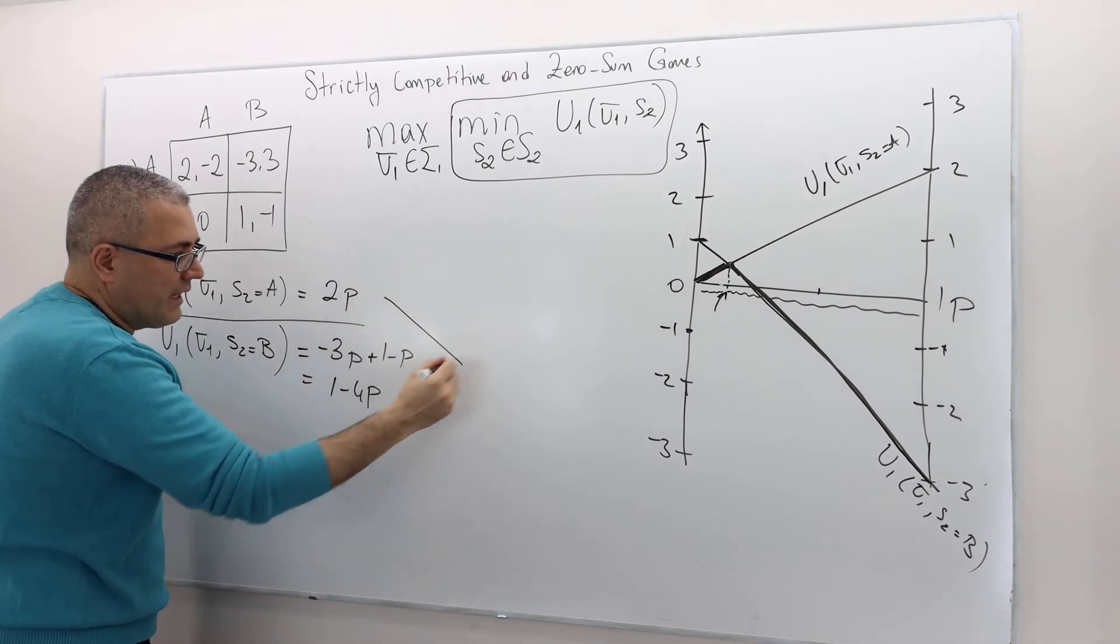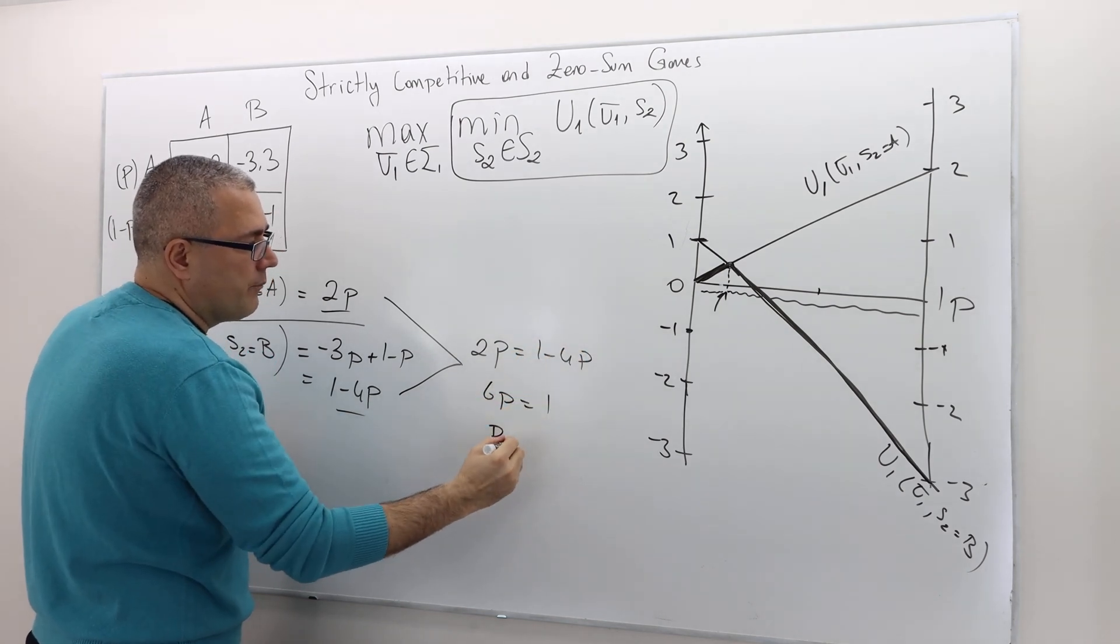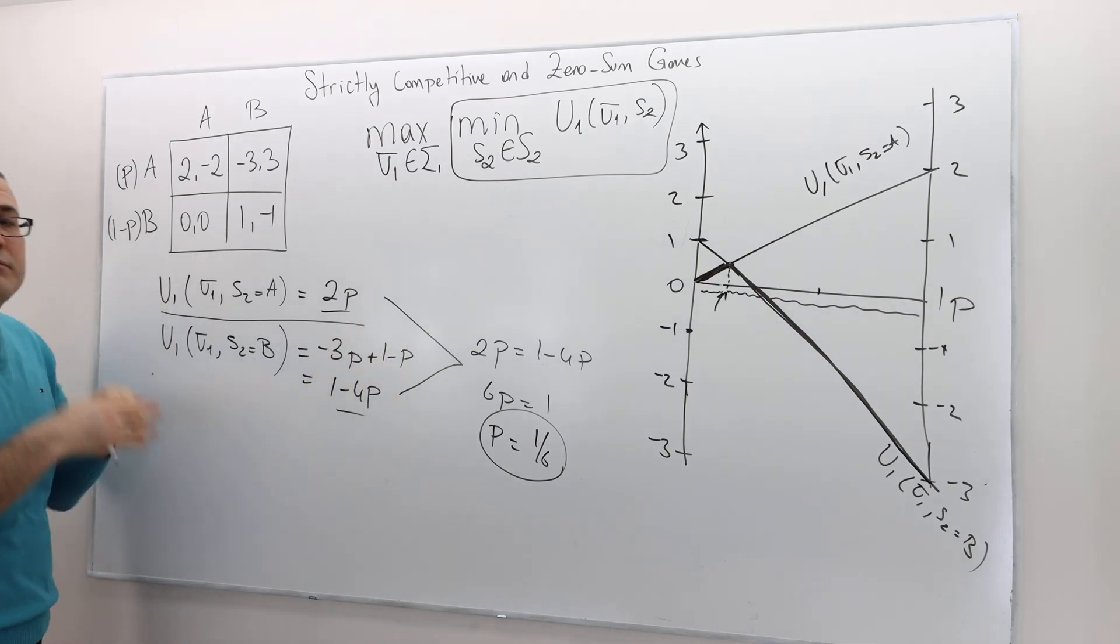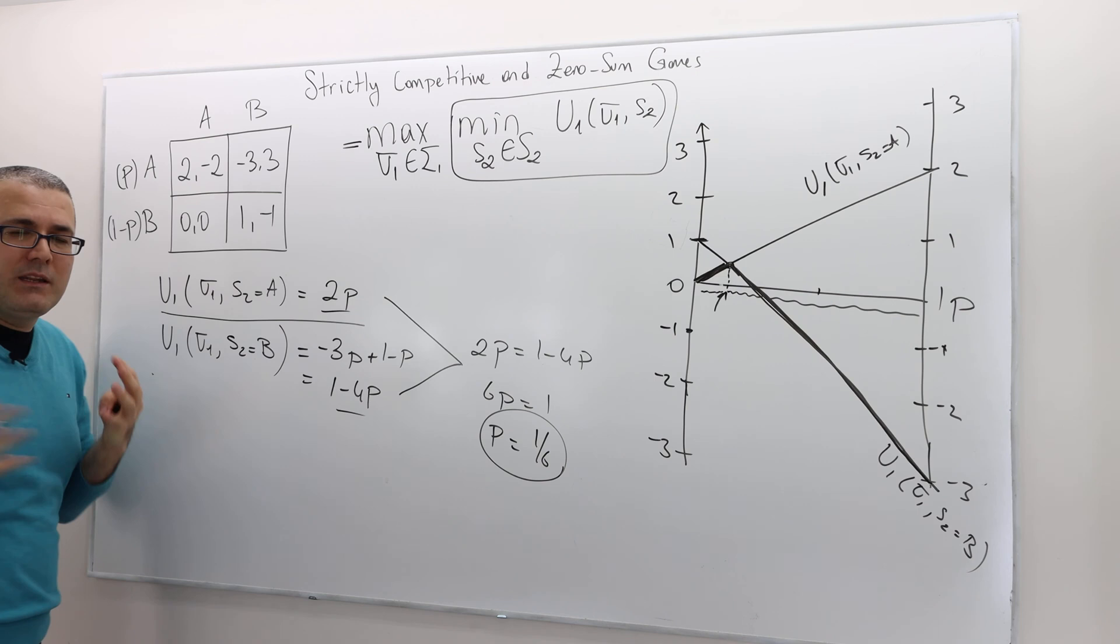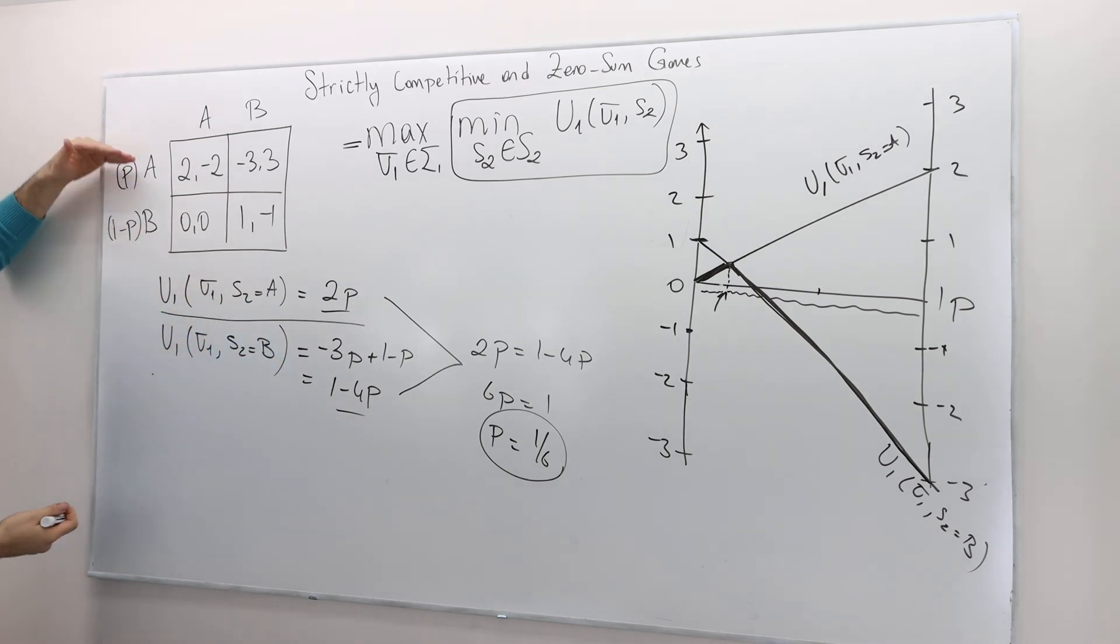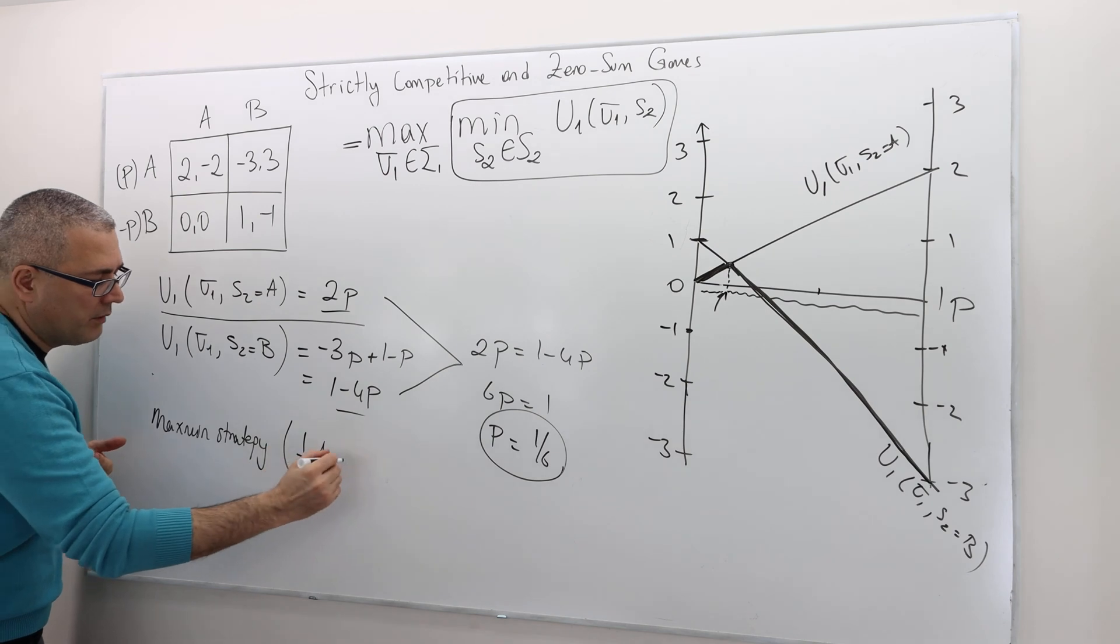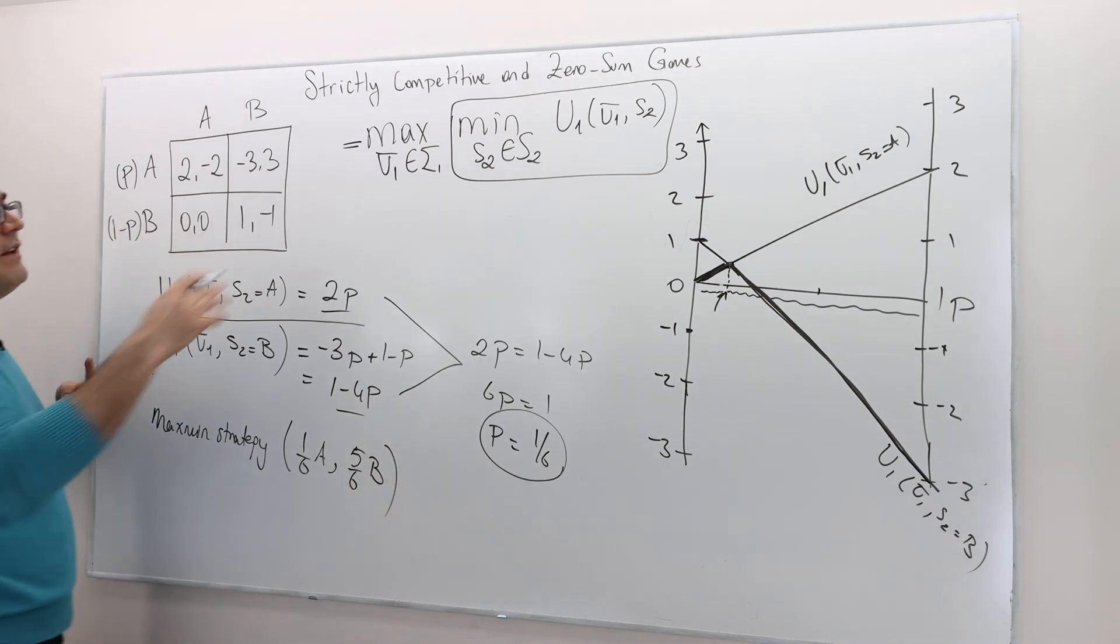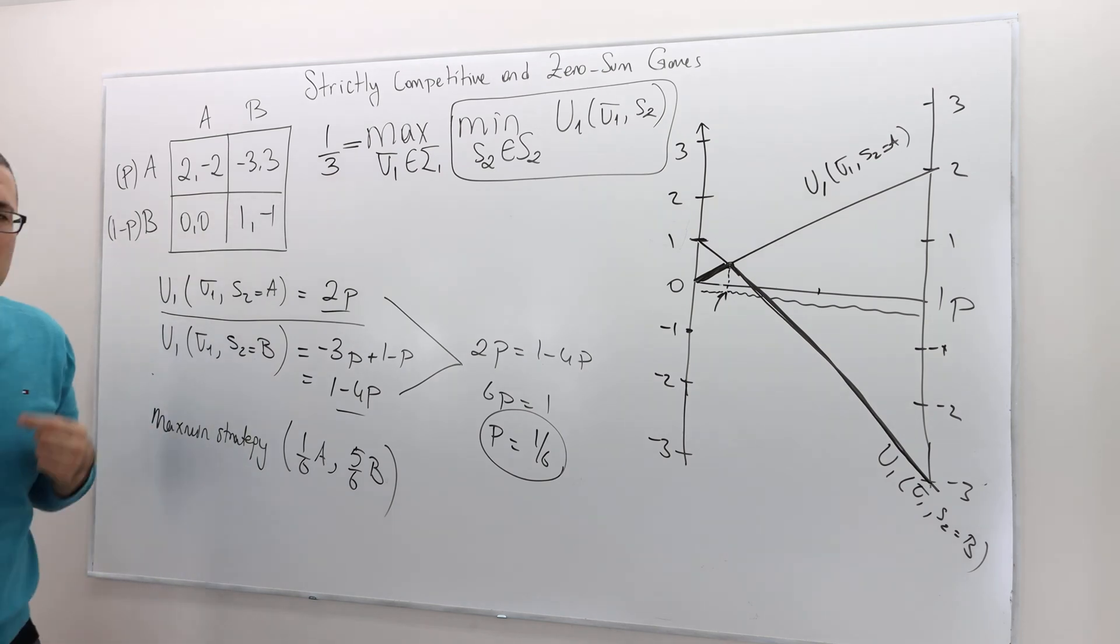How do I find it? Well, simple. You just set these two guys equal, right? So 2p equals 1 minus 4p. So 6p equals 1. So p is equal to 1 over 6. So if p is equal to 1 over 6, what is my utility level? You plug it back here or here, makes no difference. So therefore, the max-min strategy is that player one is going to play A with probability 1 over 6, and B - so the max-min strategy is that he's going to play A with 1 over 6 probability, and with the remaining probability, 5 over 6, he's going to play B. Well, what is the max-min value? Again, once you plug this here or here, it doesn't matter. So it's going to be 2 over 6, so 1 over 3. So this is the max-min value for player one.